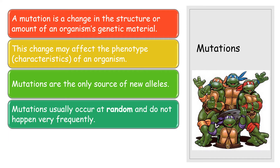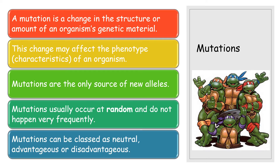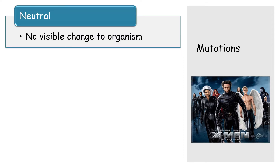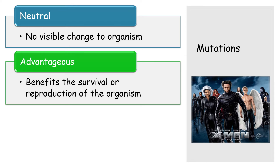Mutations occur at random and don't happen very frequently. They can be classed as neutral, advantageous, or disadvantageous. Neutral mutations show no visible change to the organism — they're often referred to as silent mutations because you can't pick them out; there's no change to the phenotype. Advantageous mutations, as the name suggests, provide a benefit to the survival or reproduction of the organism.